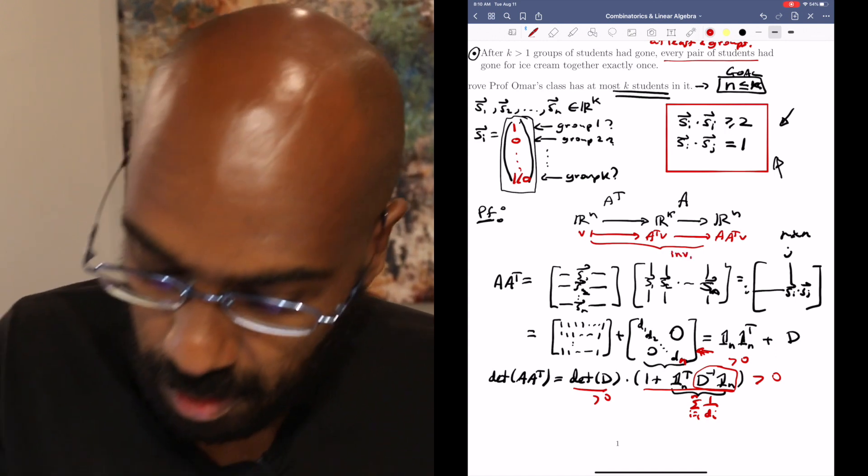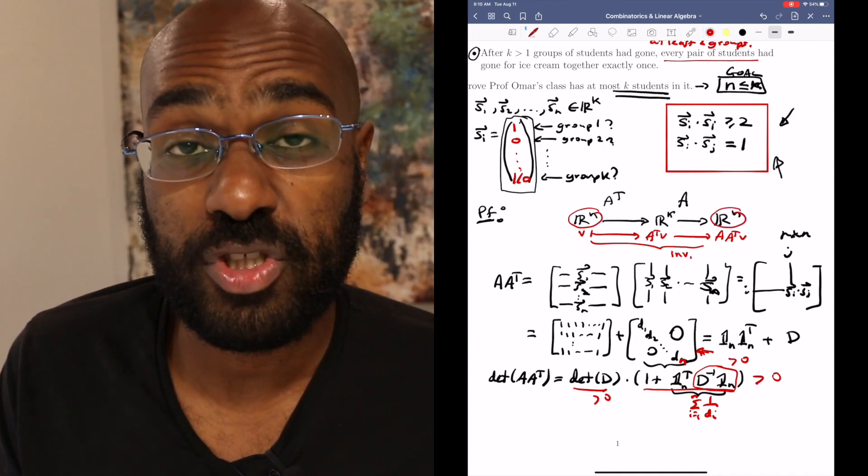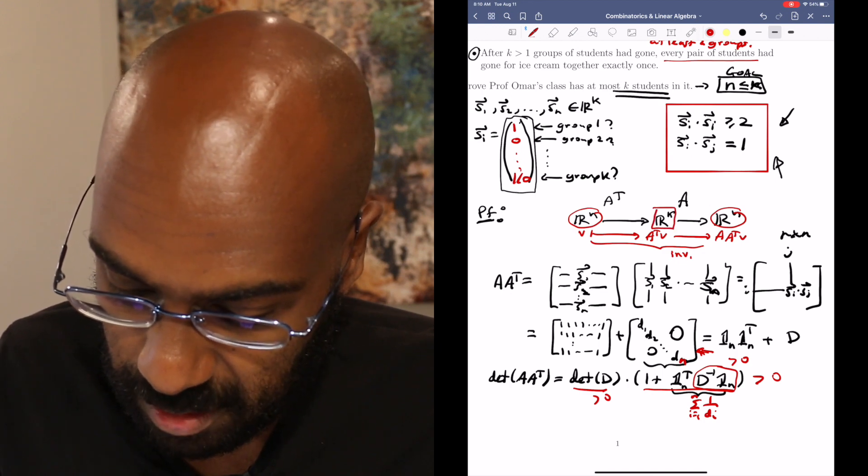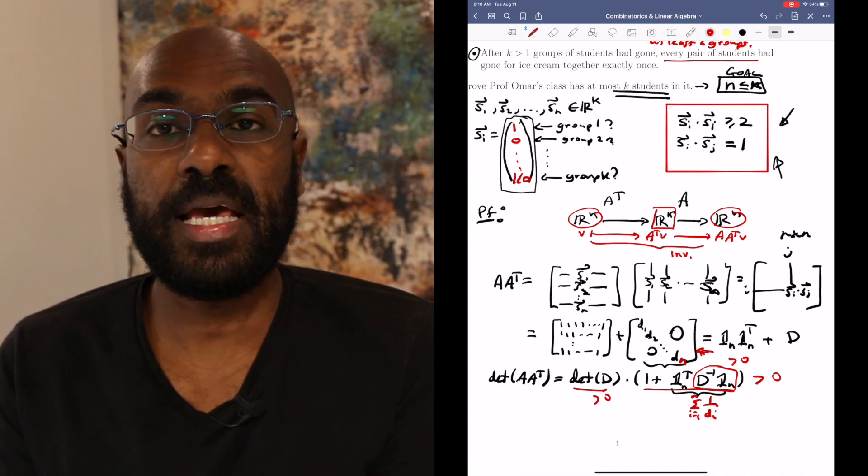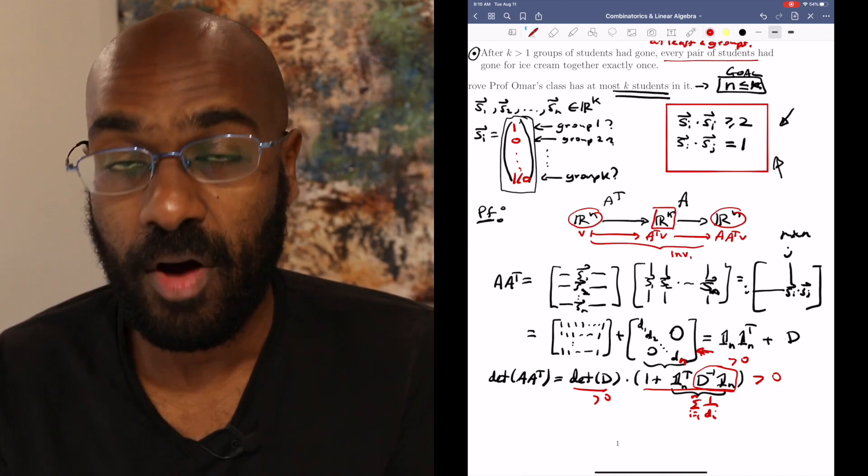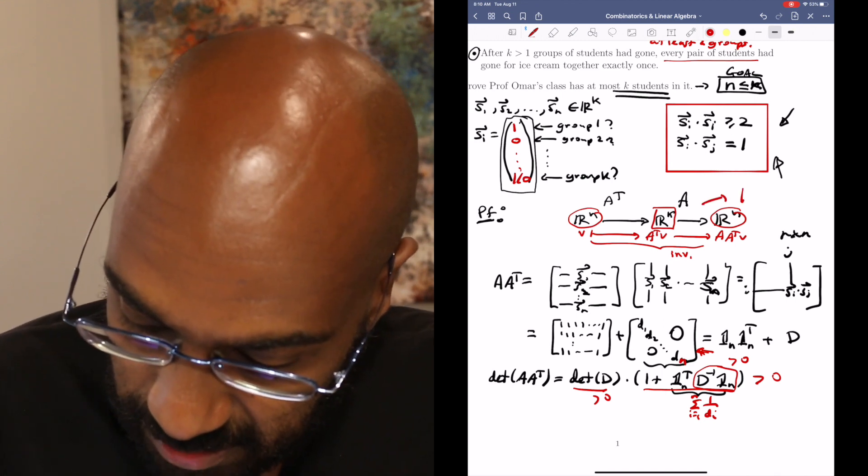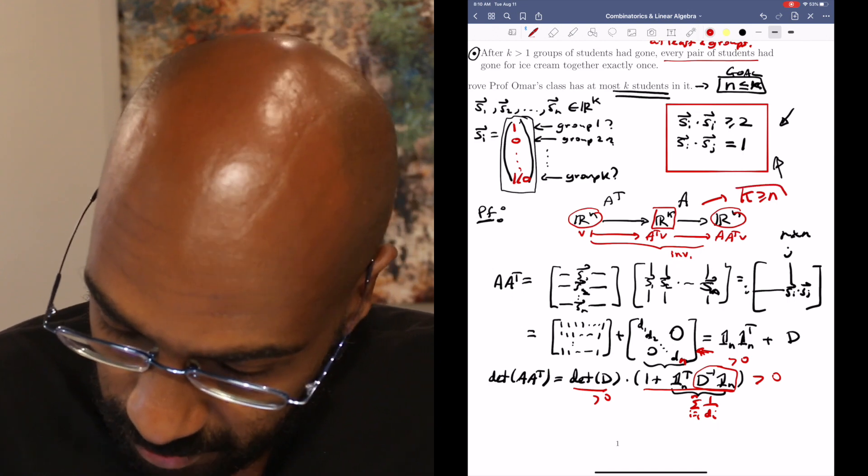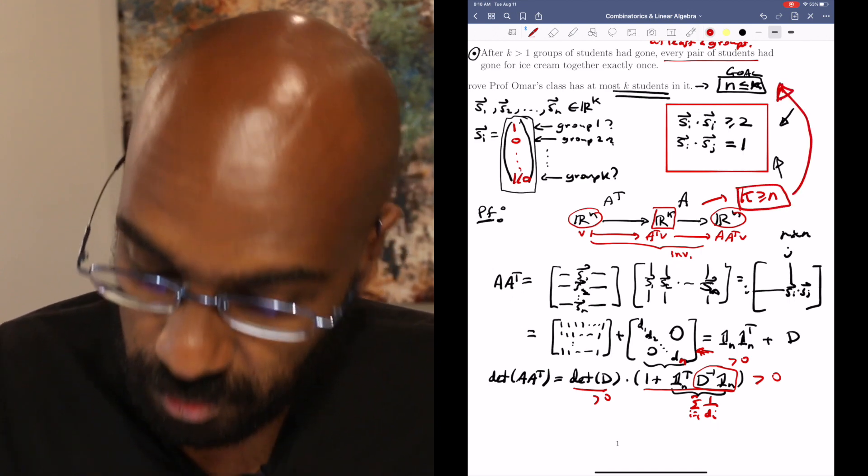Okay, well what does that mean? Well, if we're going from RN to RN with a linear transformation that is invertible and we're going through this intermediate RK, the dimension of RK can't shrink, can't be smaller than that of RN. Otherwise we'll lose information. So it must be the case then that K is at least N. And that is exactly the thing that we wanted to prove as our goal.